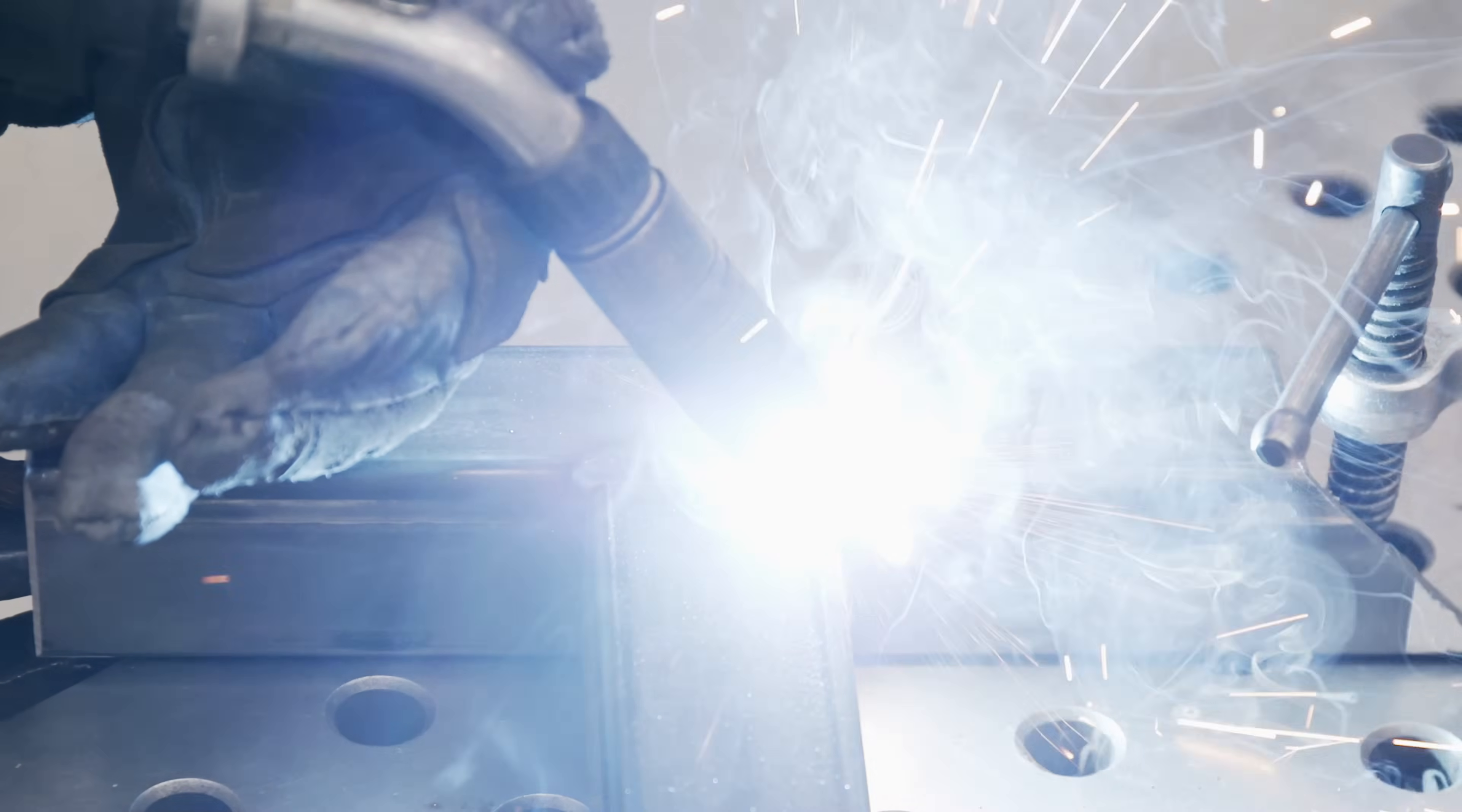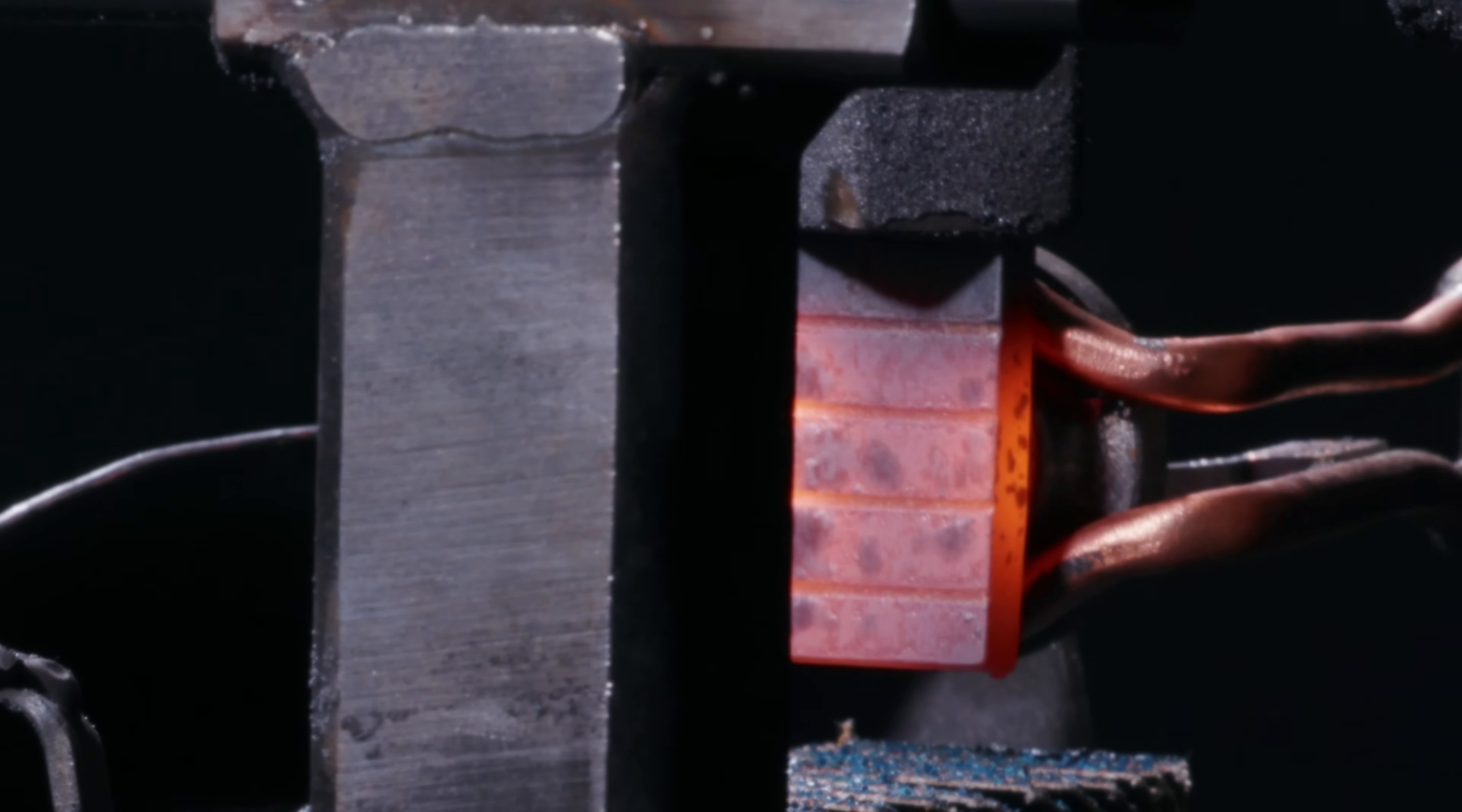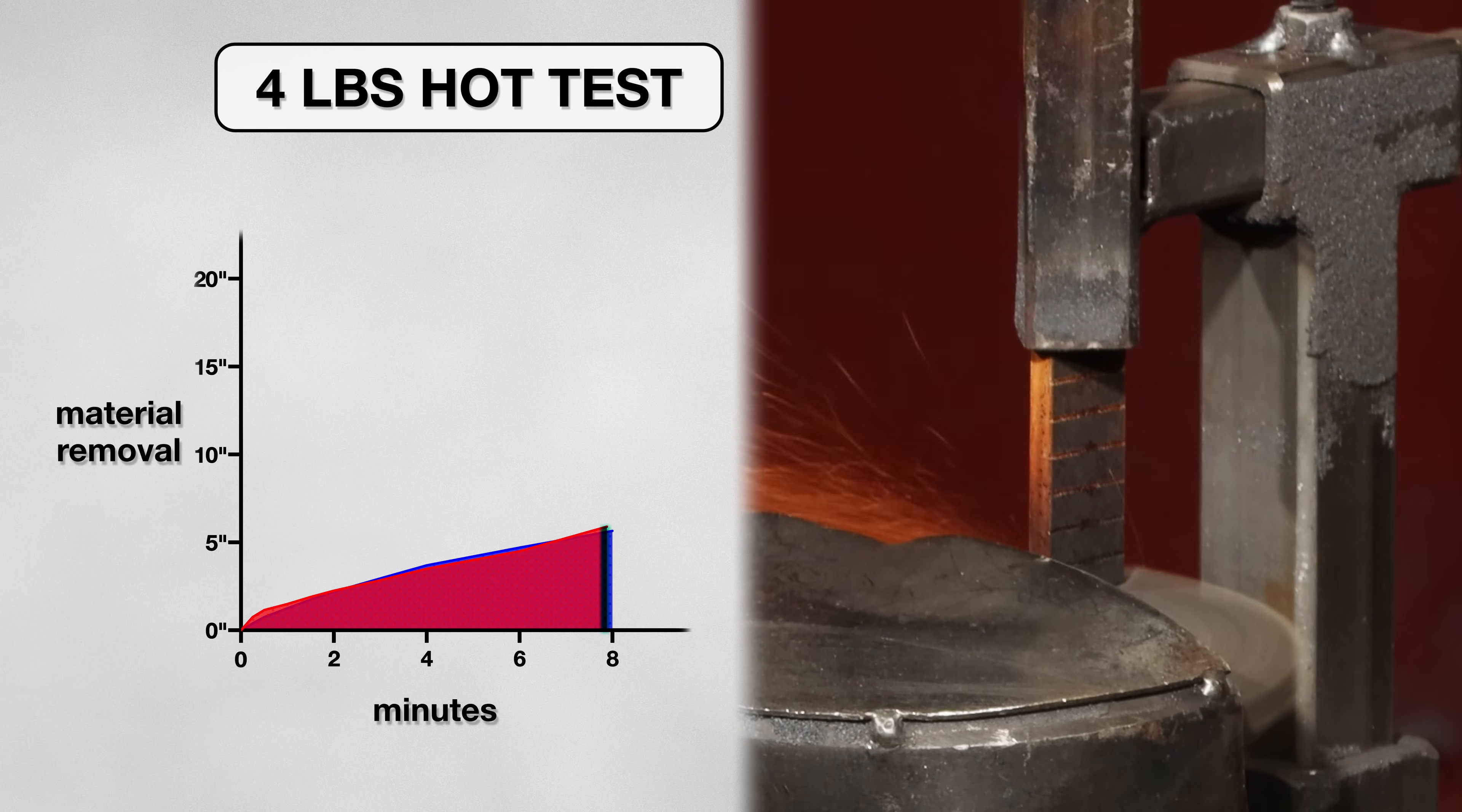Next, I wanted to see how the disk would grind against a hot weld. I simulated this by heating up the first few inches of my coupon before I started grinding. I was hoping the disk would cut more metal, but these results were almost identical. After about eight minutes, only six inches of material was removed.